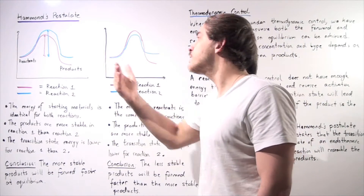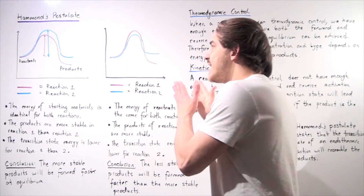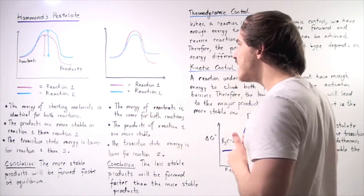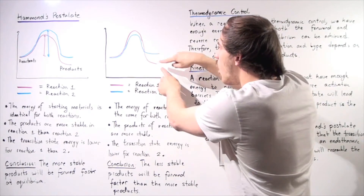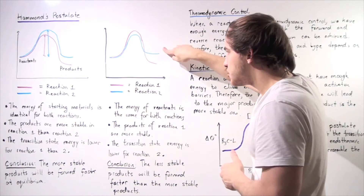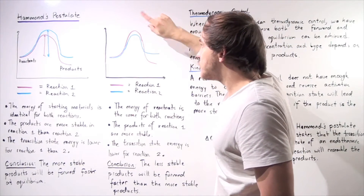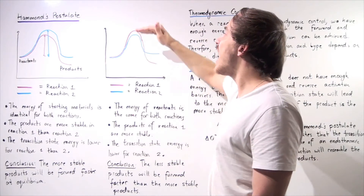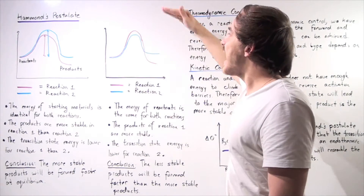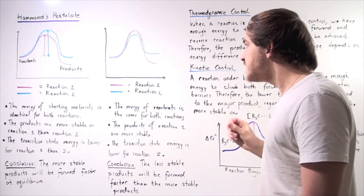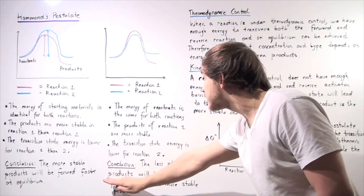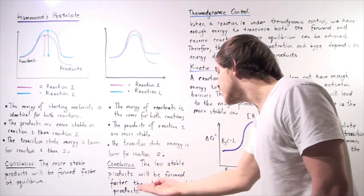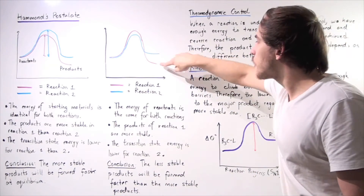Now let's look at situation two. Here, our reactants are identical so they have the same exact energy, and the products of reaction one are more stable than those of reaction two. But now our transition state energies are flipped — the purple reaction has the higher transition energy and the blue reaction has the lower transition energy. This means the less stable products of reaction two — the blue reaction — will be formed faster than the more stable purple products.